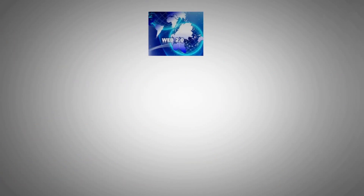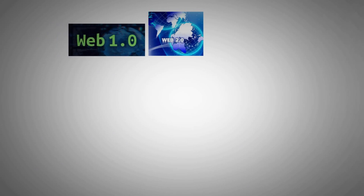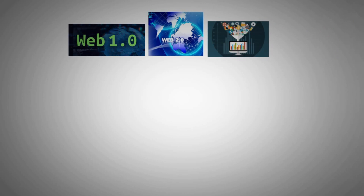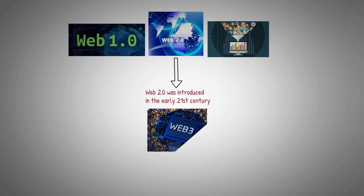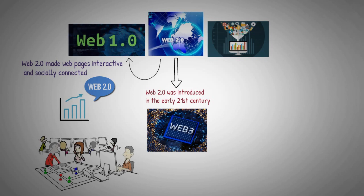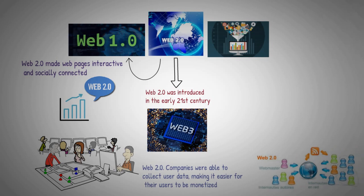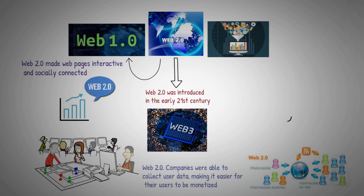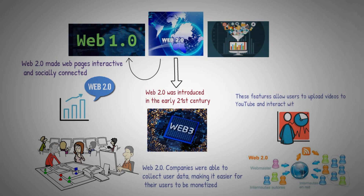The rise of Web 2.0. The Web 1.0 platform was expanding as technology improved, now including interactive and dynamic features. Web 2.0 was introduced in the early 21st century and was the most popular version until Web 3.0 became more widespread. Web 2.0 made web pages interactive and socially connected, and also saw the rise of user-generated content. Many companies focused on creating and launching apps to attract large numbers of people to their platforms. Companies were able to collect user data, making it easier for their users to be monetized. Users were able to operate software and create content, enabling features like uploading videos to YouTube and interacting with other Facebook users.